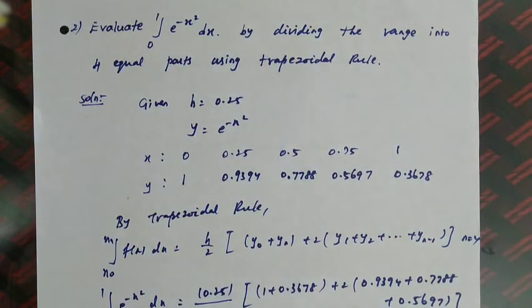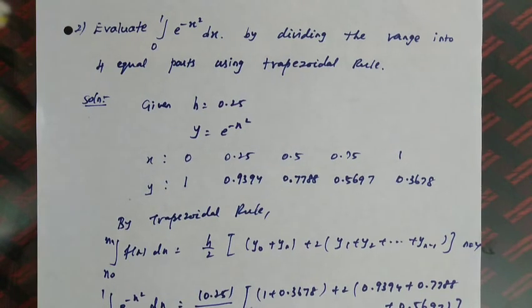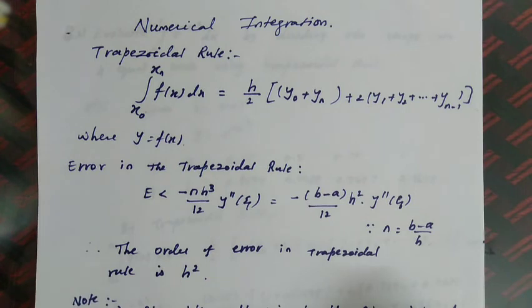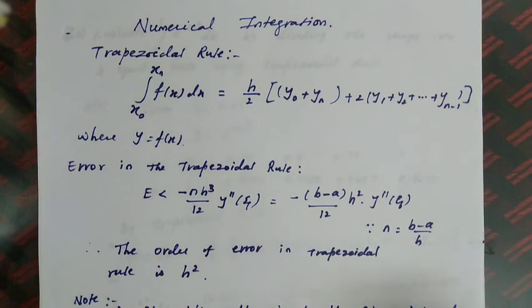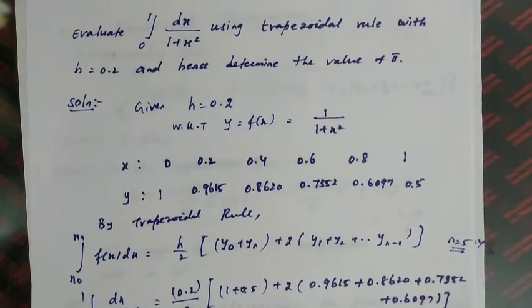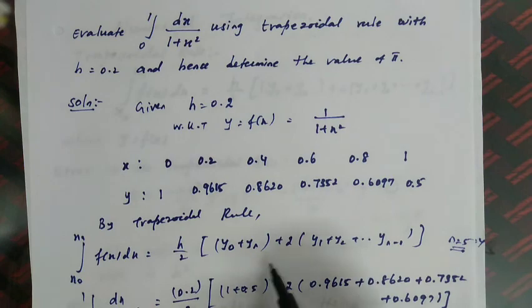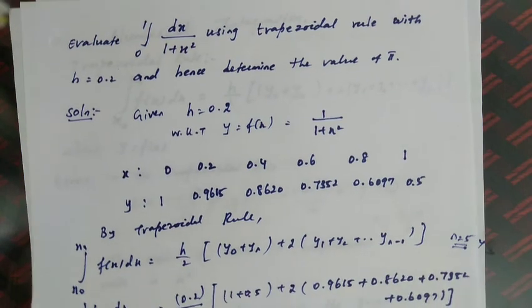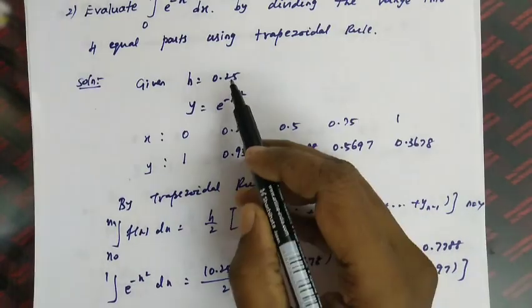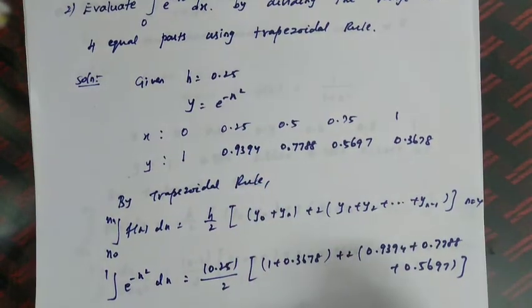Under numerical integration, the first result is the trapezoidal rule. For it, we have the error formula, the order of error, the reason for its name, and the geometrical interpretation. In Problem 1, the h value was given directly, and we found y values, applied the rule, and also determined pi. In Problem 2, h was derived as 0.25 by dividing the range into 4 equal parts. Thank you for watching.